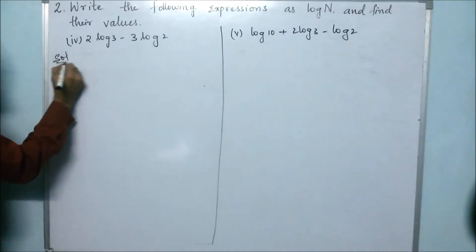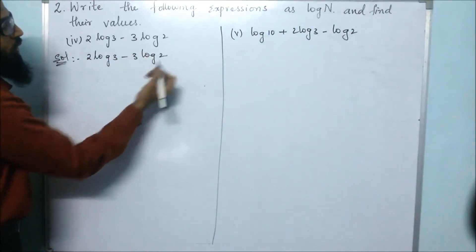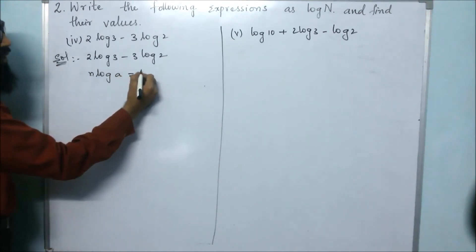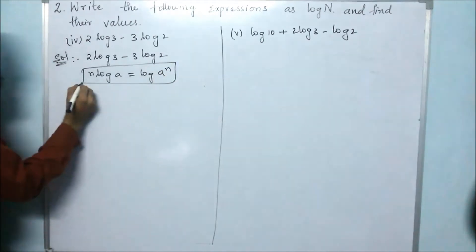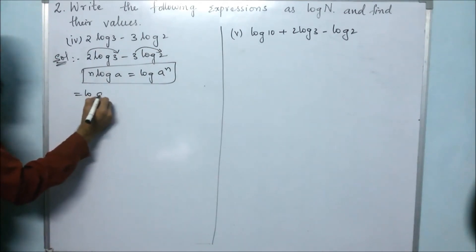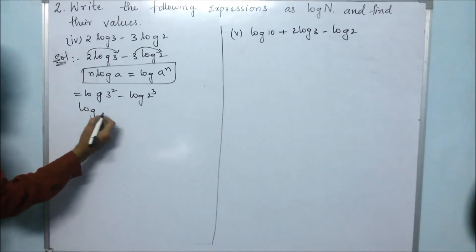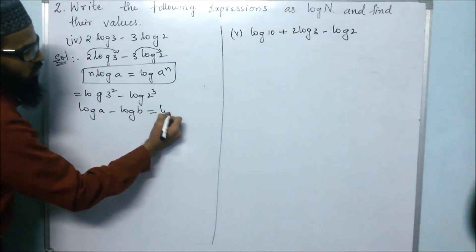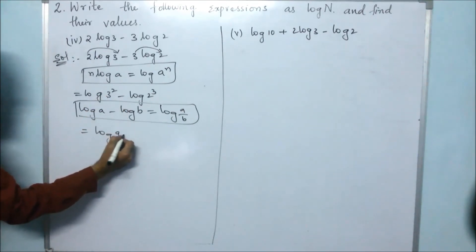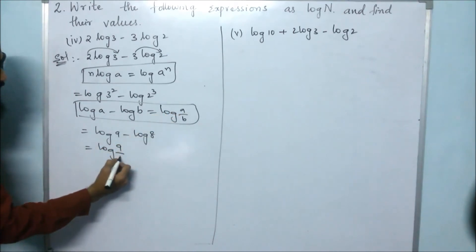For the fourth bit: 2 log 3 minus 3 log 2. Using the formula n log a equals log a to the power of n, we rewrite this as log 3 squared minus log 2 cubed. Then using log a minus log b equals log a/b, we get log 9 minus log 8, which gives log 9/8.